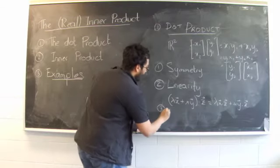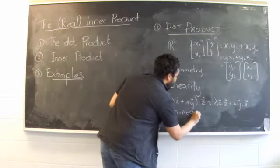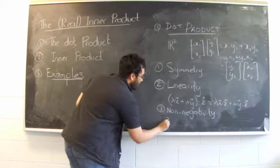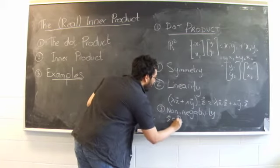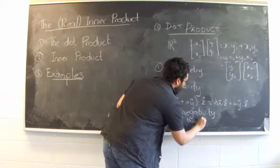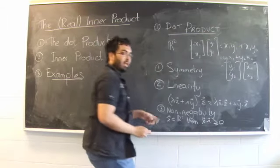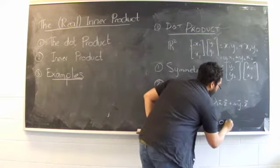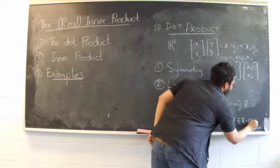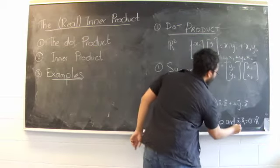And the third big property is that of non-negativity. So what that means is that if I take a vector x in R2 and dot it with itself, x dot x, that better be bigger than or equal to 0. And the only time it can be 0 is when x dot x equals 0 if and only if x itself is 0, which I'll write down here.